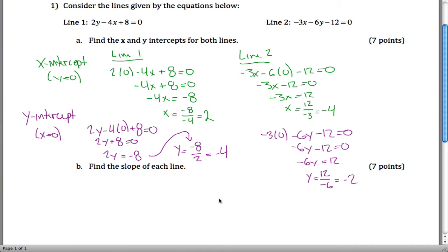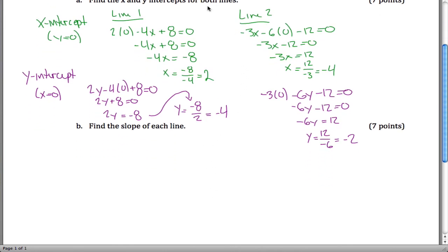So now we have the x and y intercepts for both lines. Now find the slope. We have two points in each case.